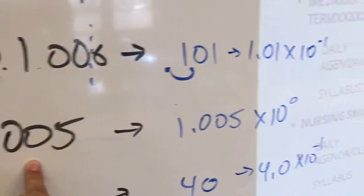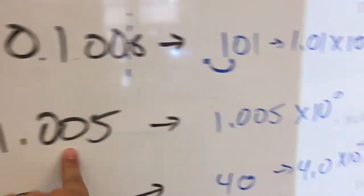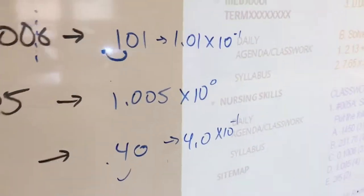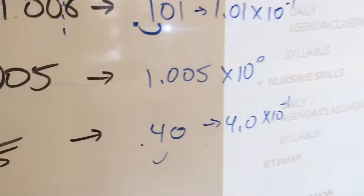This is already four significant digits and you don't have to do anything. It's already between one and ten, so multiply by ten to the zero. Remember, any number raised to the zero power is just one.